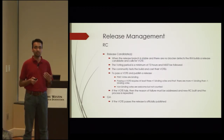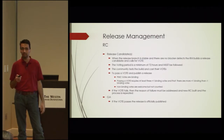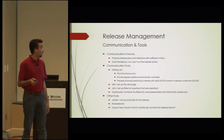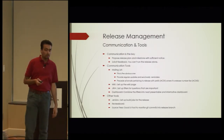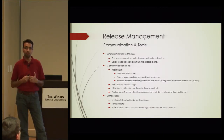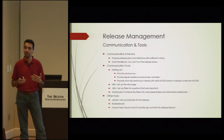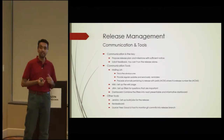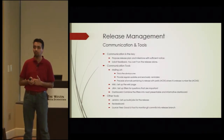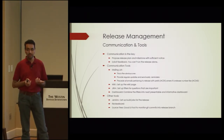If the vote fails, the reason for failure gets addressed and a new RC is built and the process is repeated — unfortunately, sometimes many times. Once the final RC is done and everybody is happy, we do a GA, the vote is officially published, and the release is made. In order to really run releases, especially in an open source community where everybody is in different time zones and working different hours, communication becomes very important — it is really the key to running efficient releases.